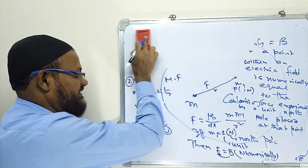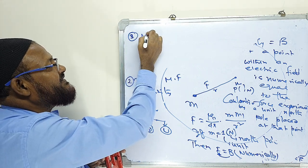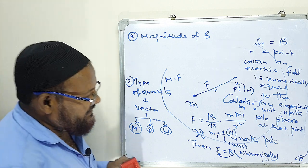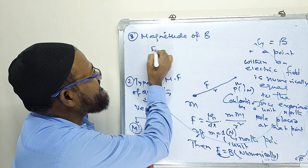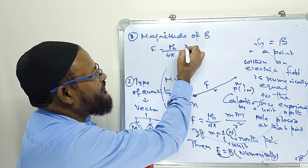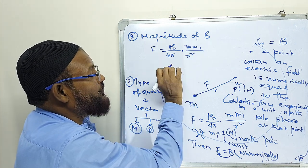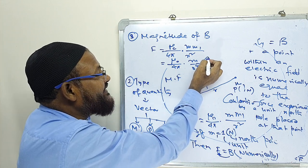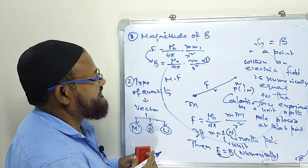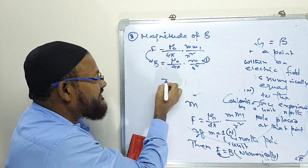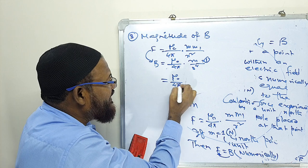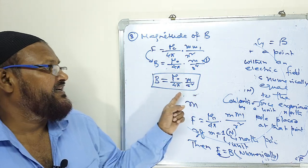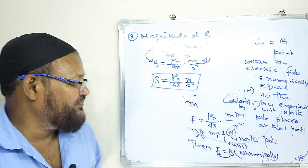Now I am going to discuss the magnitude. Third point is the magnitude of B. If we put M1 equals 1 in the formula F equals mu naught divided by 4 pi times M times M1 divided by R square, then F equals B. Therefore B equals mu naught divided by 4 pi times M by R square. This equation gives the magnitude of B.